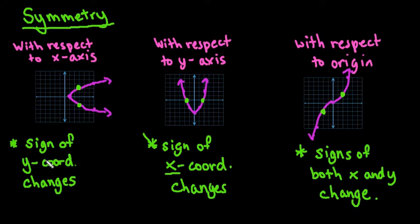If the equation is the same, then you have symmetry with respect to the x-axis if you change the y-coordinate. Same thing for y-axis. You would change the sign of the x-coordinate to see if it's the same. And then for the origin, you would change the signs of both to see if it yields the same equation.